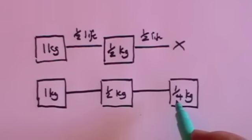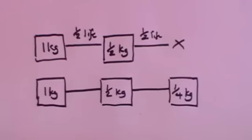So you see you're never going to get strictly to zero because you're always going to have half of what you had before.